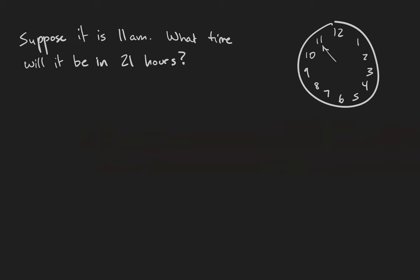You are actually more familiar with this relation than you might realize. Suppose it is 11 o'clock in the morning. What time is it going to be in 21 hours? Well, is the answer 11 plus 21, which is 32? No, of course not. The answer is, let's see, 21 is 3 hours less than a full day, so it's actually going to be 8 o'clock in the morning.